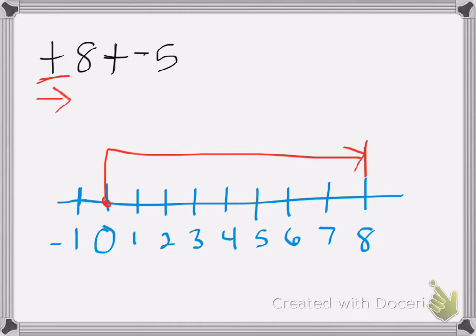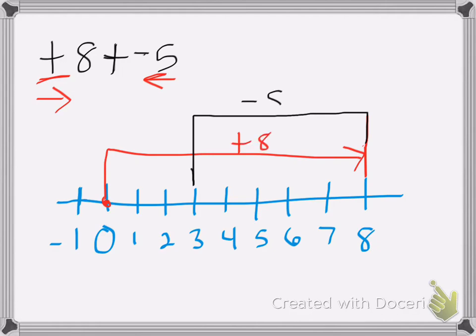I'm going to add a negative 5, and when I have a negative, I'm going to be going to the left. So I'm going to go to the left five places: 1, 2, 3, 4, 5 — and I'm going to figure out what that lines up with. That's positive 3. So positive 8 minus 5, my answer is 3.